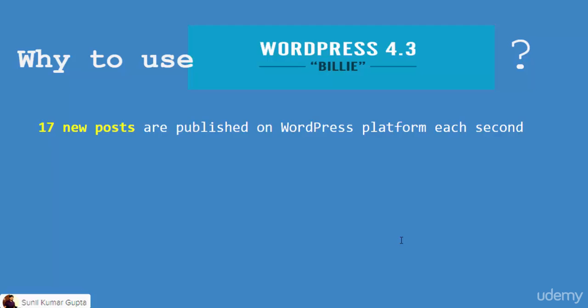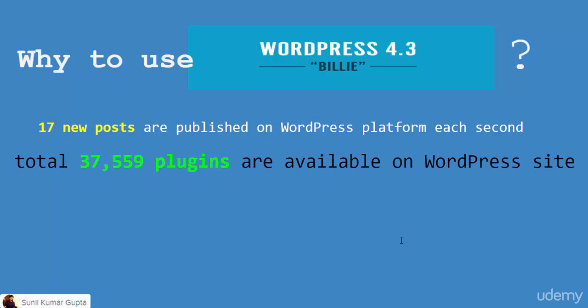In total, 37,559 plugins are available on the WordPress website that you can use for web development, and most of them are free. These numbers increase day by day. WordPress plugins are very popular — you want to integrate social media into your website, you can use a plugin; you want to have a form, you can use a plugin; you want to create landing pages, you can use a plugin.